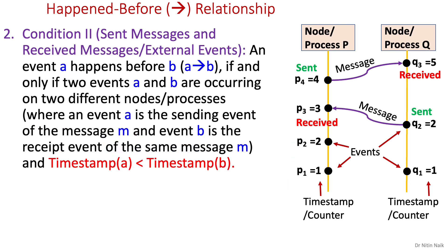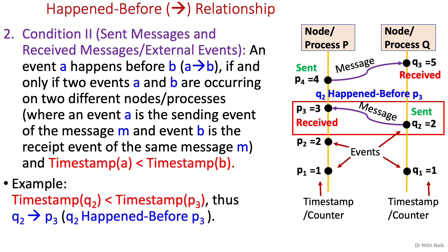Second condition: an event A happens before B if and only if two events A and B are occurring on two different nodes or processes, where event A is the sending event of message M and event B is the received event of the same message M, and the timestamp of A is less than the timestamp of B. For example, event Q2 is a sent message event on node Q and event P3 is a received message event on node P, and the timestamp of Q2 is less than the timestamp of P3.